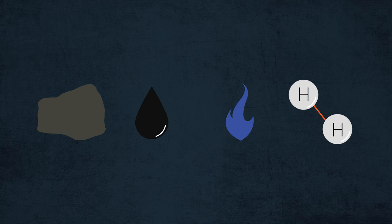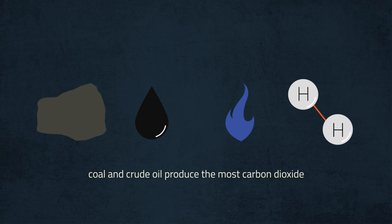If we compare coal, oil, natural gas, and hydrogen as fuels, you can see that when they combine with oxygen, coal and crude oil produce the most carbon dioxide. So using natural gas in place of oil and coal does help reduce carbon dioxide emissions.